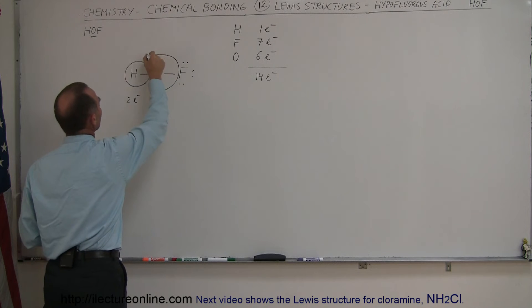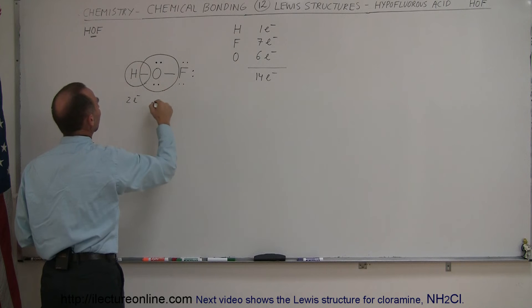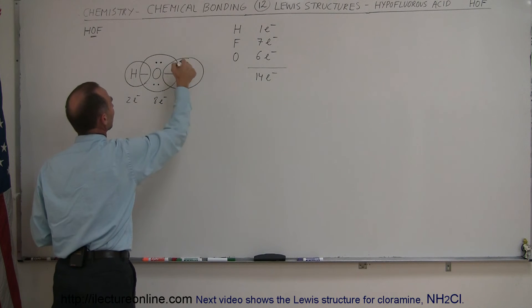If I draw a circle around here, you can see that the oxygen would have 2, 4, 6, 8 electrons, at least part of the time, and fluorine, when I draw a circle around here, we can see 2, 4, 6, 8, 8 electrons here.